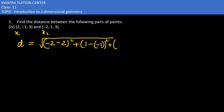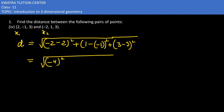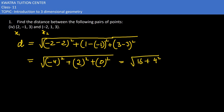Then we also have a 3 minus 3, whole square. So minus 2 minus 2 gives us minus 4, whole square. And 1 minus minus 1 is plus 2, whole square. 3 minus 3 is 0, squared. So 4 squared is 16, and 2 squared is 4. So we get √(16 + 4) = √20.